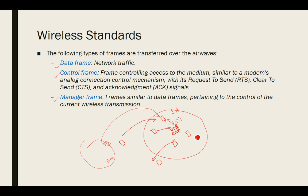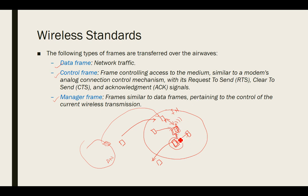The second type is the control frame, which controls access to the medium — similar to a modem's request-to-send, clear-to-send, and acknowledgement mechanism. When a device wants to send data, it must first acquire the medium by sending a request-to-send; upon receiving acknowledgement, it may use the medium to transmit. These are called control frames.